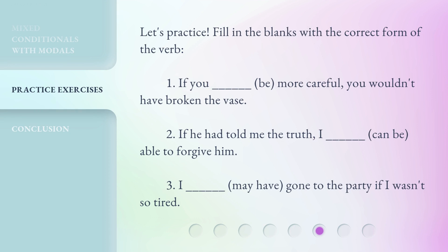Let's practice. Fill in the blanks with the correct form of the verb. 1. If you ___ (be) more careful, you wouldn't have broken the vase. 2. If he had told me the truth, I ___ (can be) able to forgive him. 3. I ___ (may have) gone to the party if I wasn't so tired.